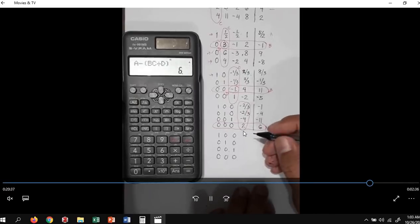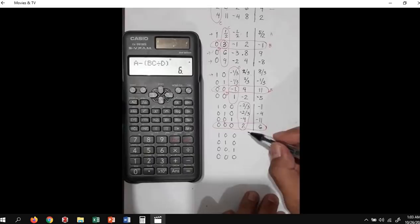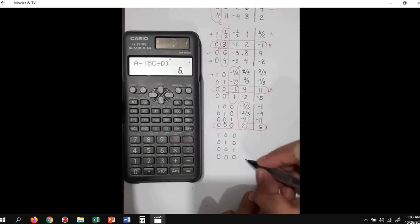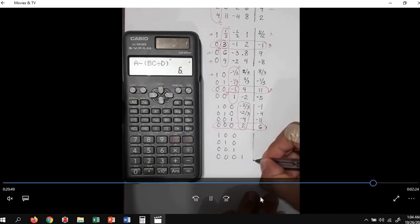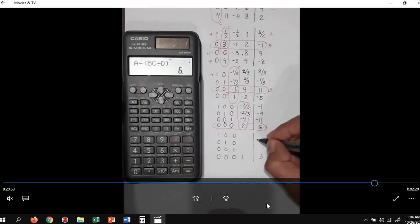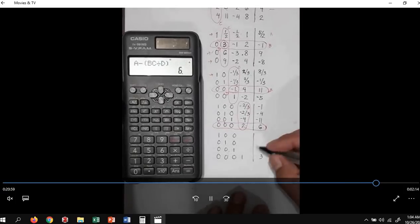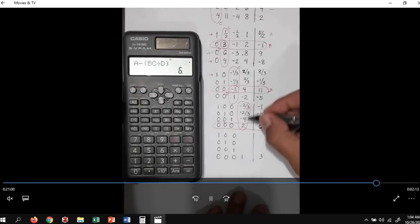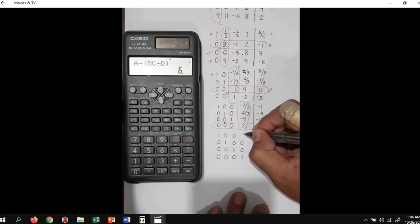Okay, so we have two divided by two is equal to one. So we'll now target our last pivot element. Six divided by two is three. So we'll simply write zeros for the rest of this column here. So we have zero, zero, and zero.